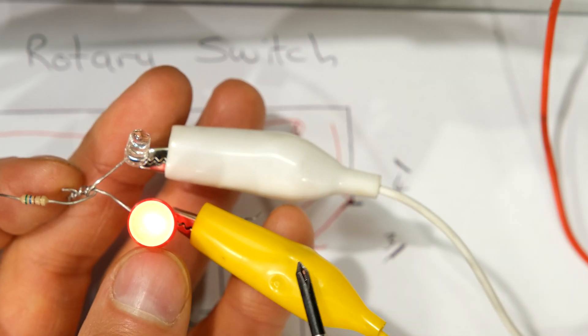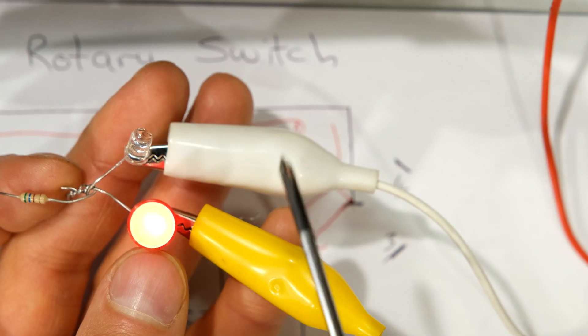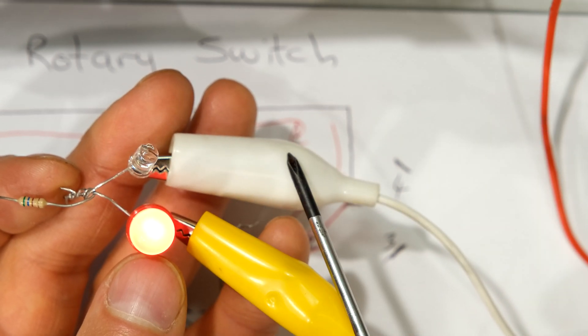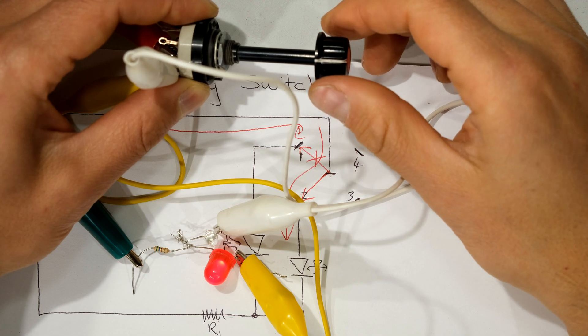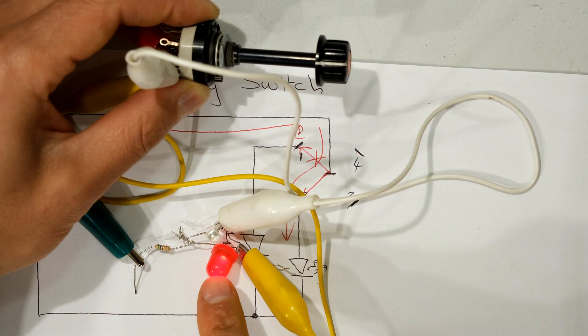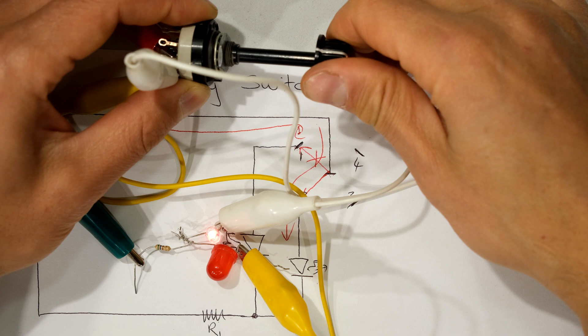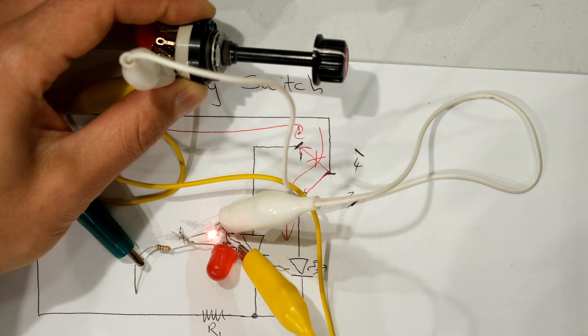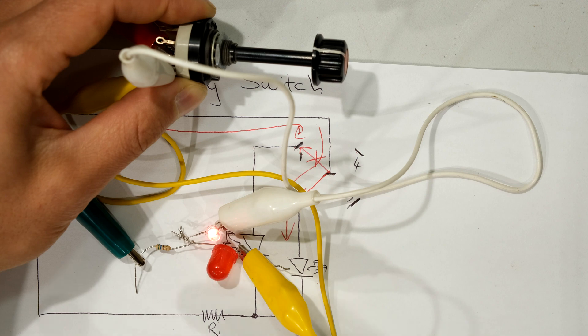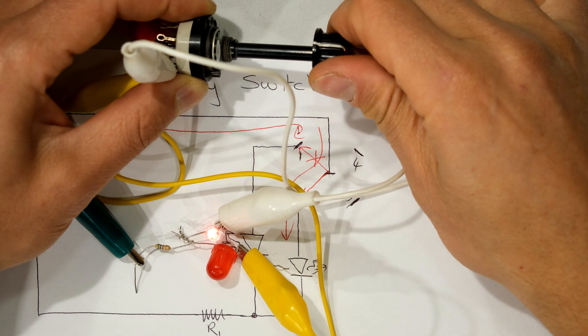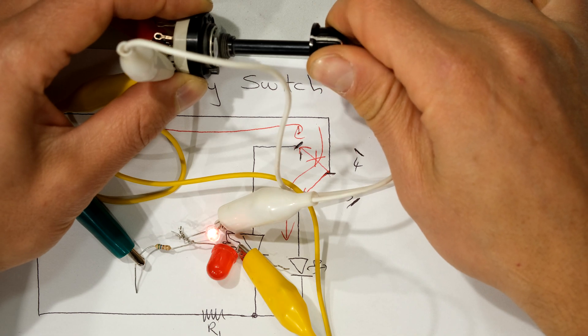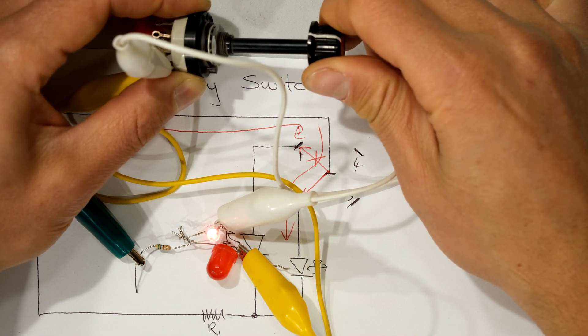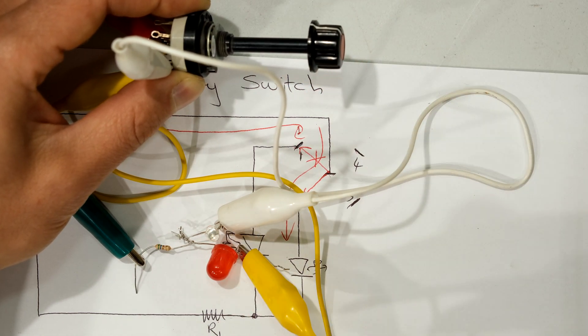Right there you can see the one LED is on, that's connected to my pin one, and the other LED is connected to my pin two. My rotary switch is already at position one, and that is why that LED is on. As I rotate the rotary switch to position two, can you see that I've effectively allowed current to flow through the other arm of that circuit. If I go back to one, you can see that LED is coming on. If I go to two, you can see that LED is going on. If I go to number three, now both are off.